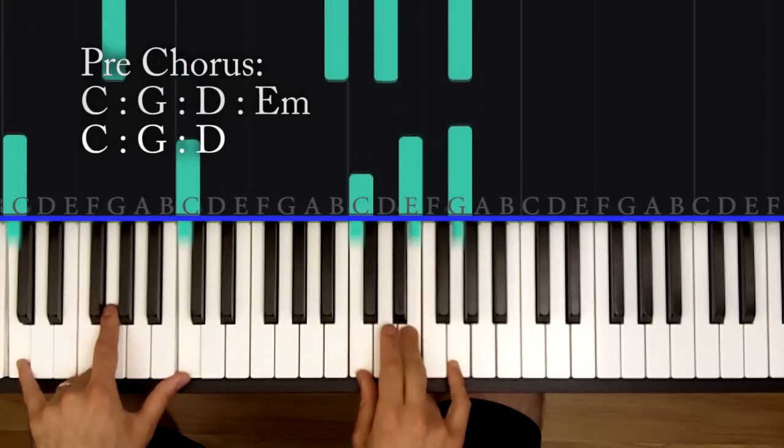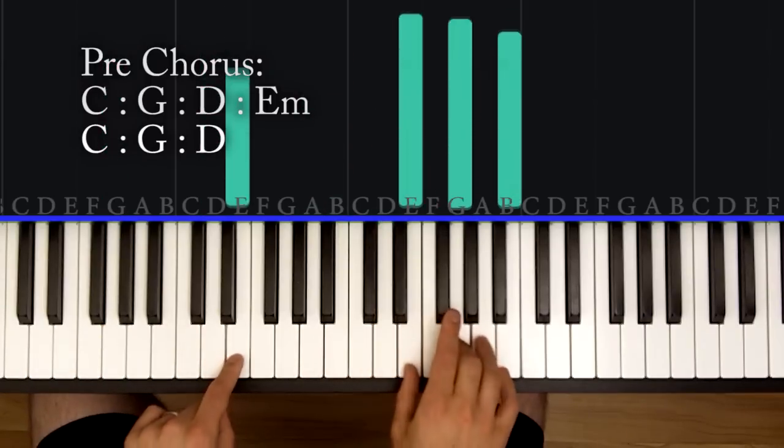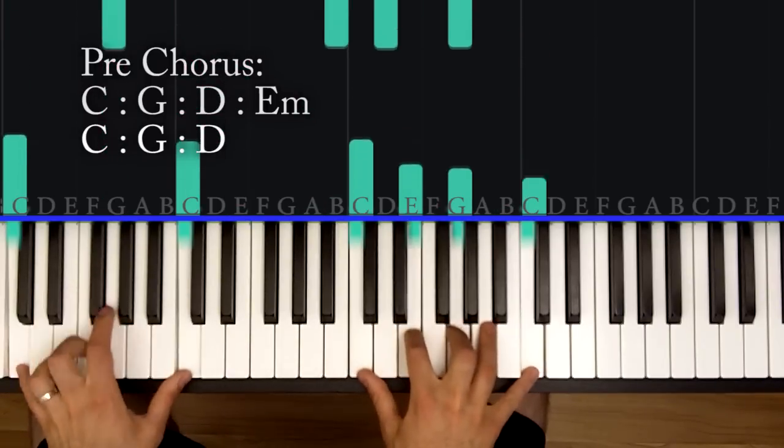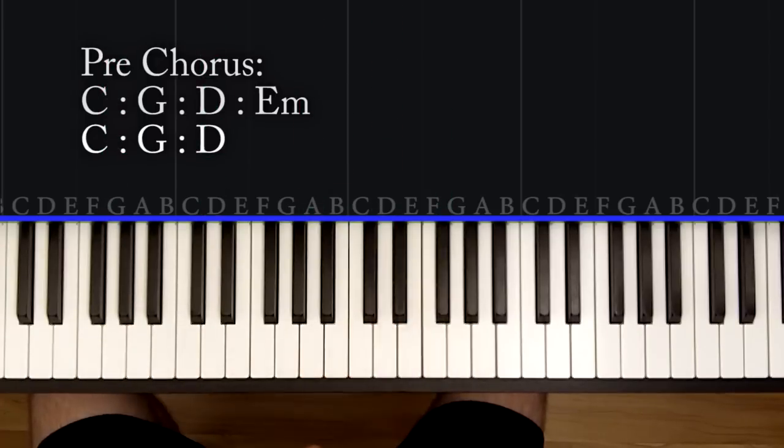You've learned the pre-chorus. It's just a C, to a G, to a D, to an E minor. And you almost repeat: C, G, D. Now the chorus.